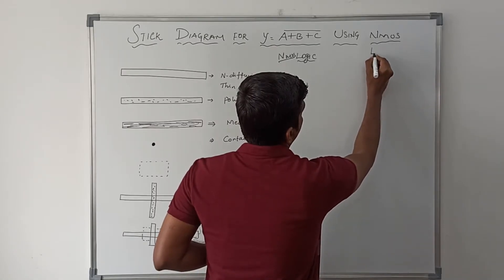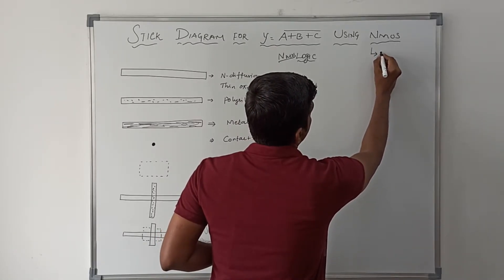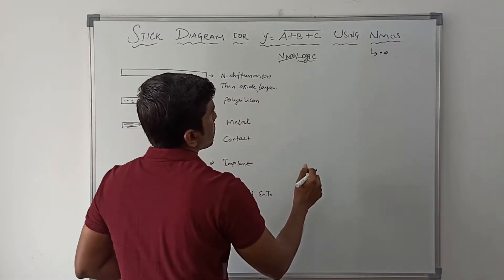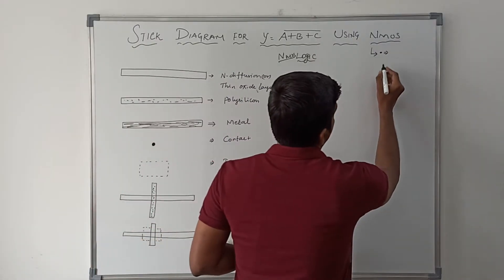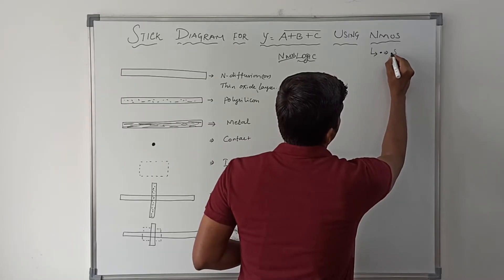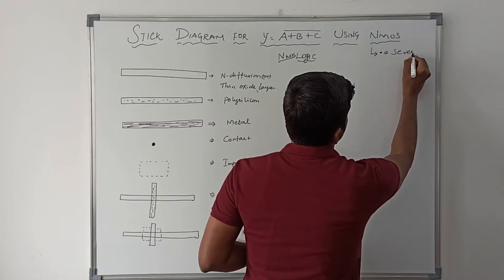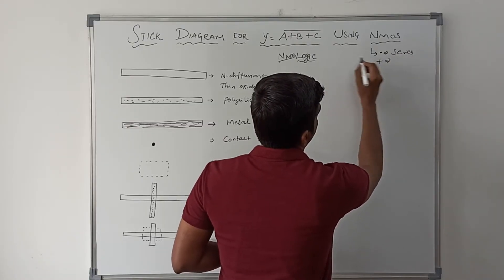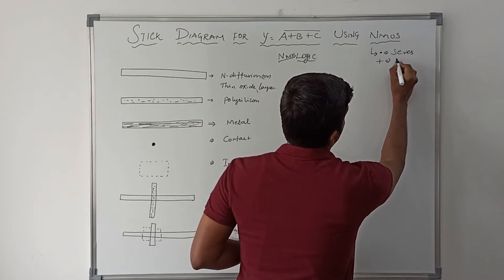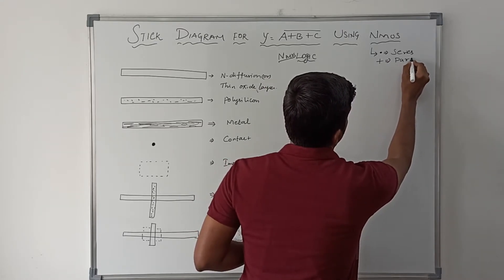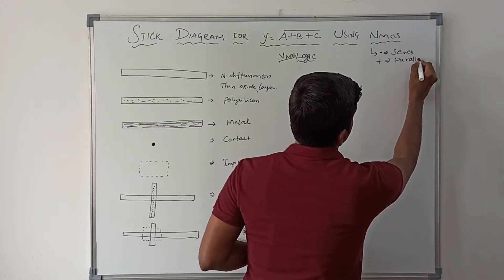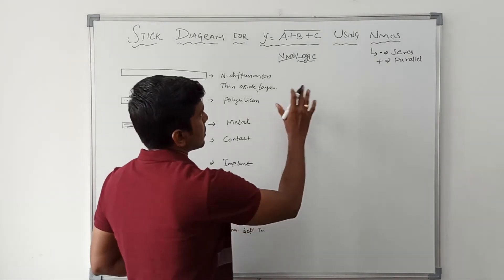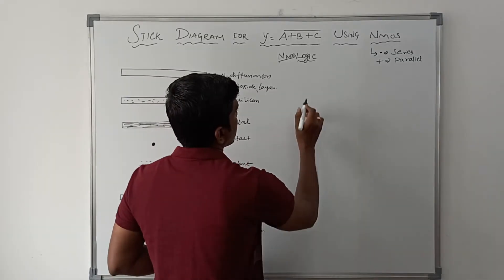The rules we know are: when a dot operator is present in the Boolean expression, NMOS transistors connect in series. When a plus operator is present in the Boolean expression, NMOS transistors connect in parallel. Using these two rules, I am going to draw the structure for NMOS logic for the given Boolean expression.